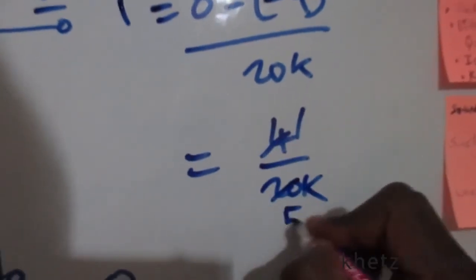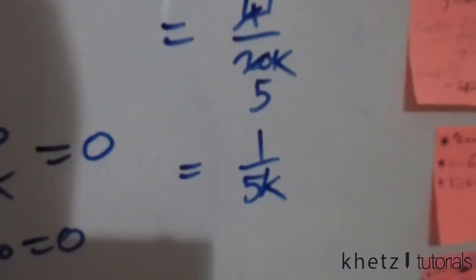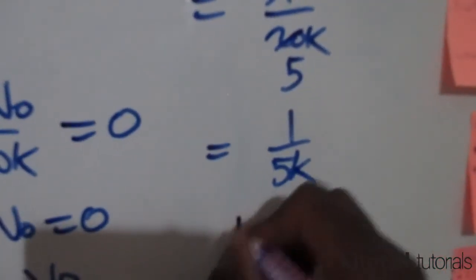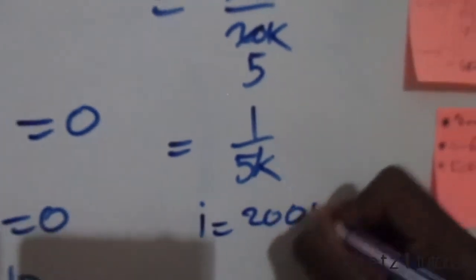That's 1 over 5k, which is equal to 1 divided by 5k. Punching that into your calculator, you are gonna get i is equal to 200 microamperes.